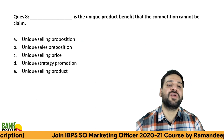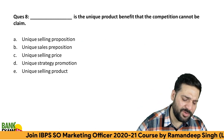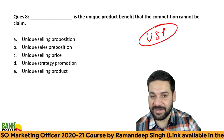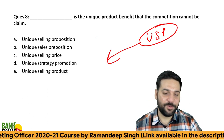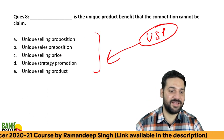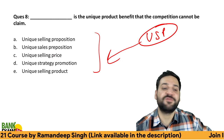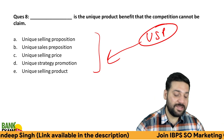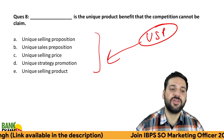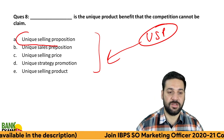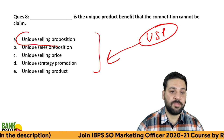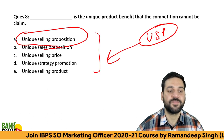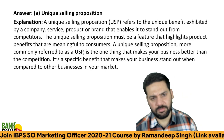Question number eight: dash is the unique product benefit. The full form of USB in marketing — everyone knows USB as a tech term, but here it stands for Unique Selling Proposition. USB — Unique Selling Proposition — is the correct answer.